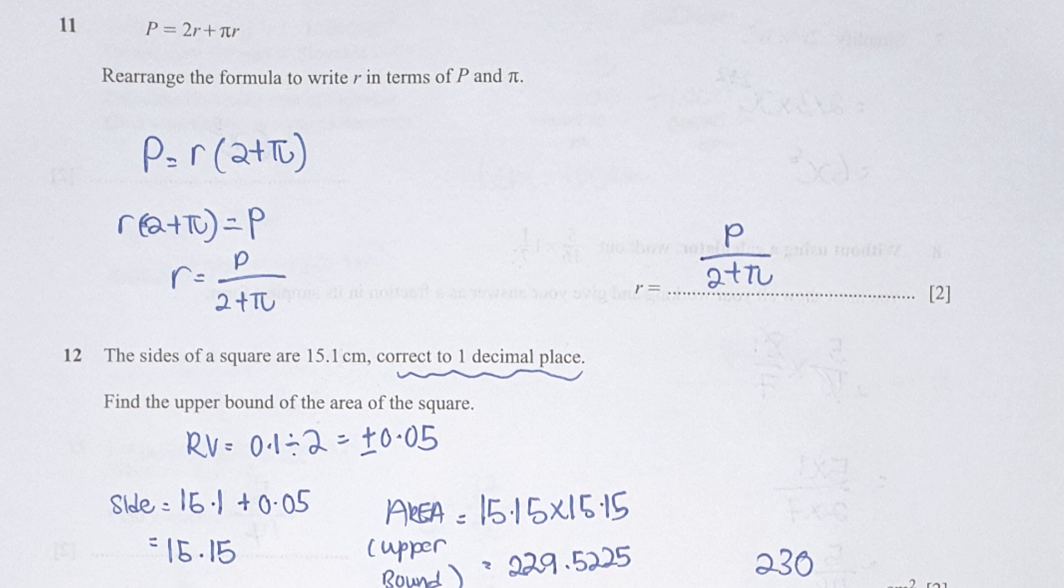Question 11, rewrite the formula and make r the subject based on the statement above. So things that I did was to extract r from the right hand side. So if you have r bracket 2 plus pi, equals to p. So r equals to p over 2 plus pi.